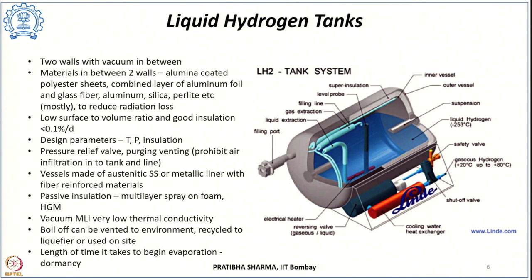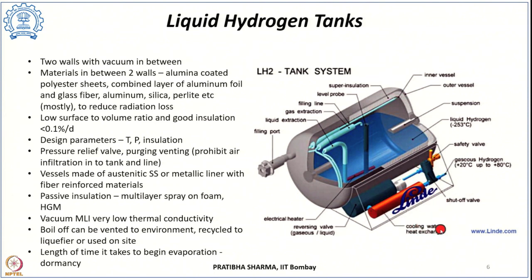Looking at the tank components: there is a filling port, liquid extraction port, gas extraction port, filling line, a probe to check the level inside, an inner vessel, insulation in between, an outer vessel, a suspension, and liquid hydrogen filling the tank. There is also a safety valve, shut-off valve, heat exchanger, cooling water heat exchanger, reversing valve, and electrical heater for when gaseous hydrogen is desired for utility.